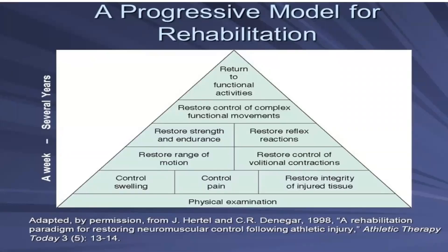There is a hierarchical, progressive model of rehabilitation. As we can see, it has a time duration of up to a week to several years, starting with physical examination, then moving on to controlling swelling, controlling pain, restoring integrity of injured tissue, restoring range of motion, restoring control of additional contraction, restoring strength and duration, restoring reflex reaction, restoring control of complex functional movements, and finally return to functional activities and return to specific sport.